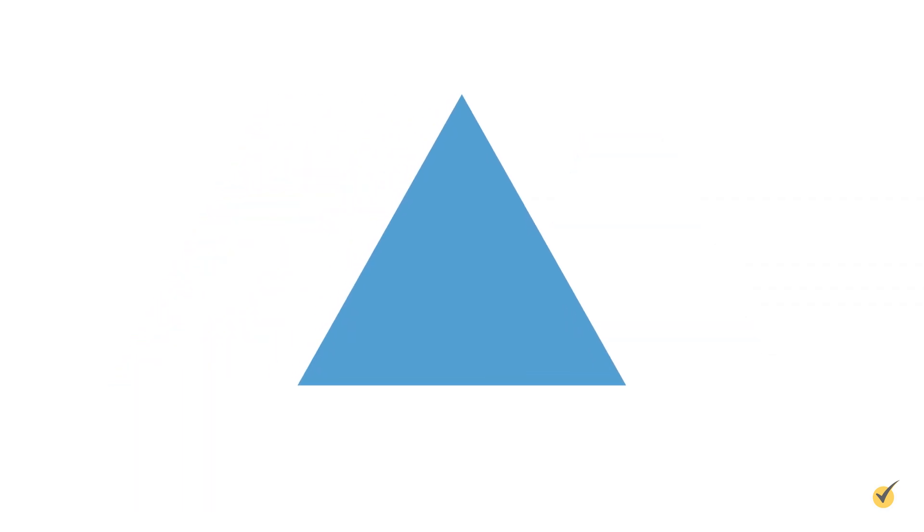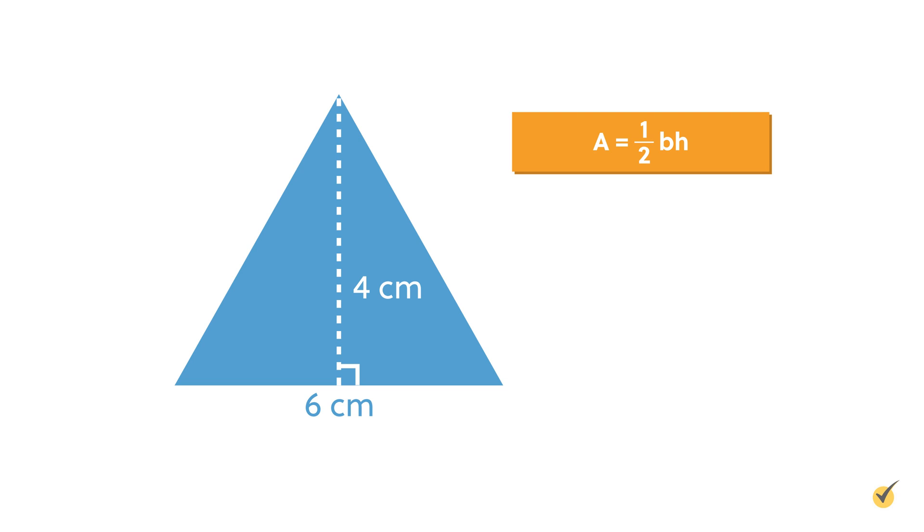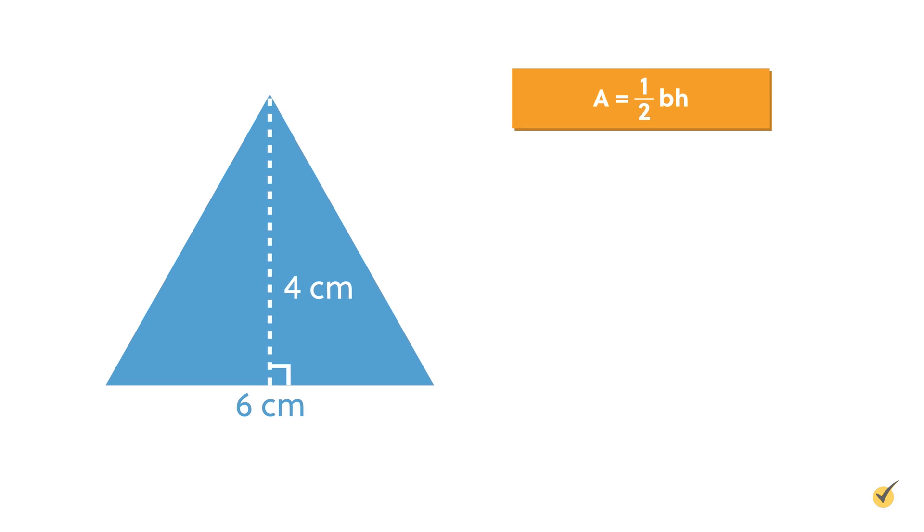Given that a triangle has a base of 6 centimeters and a height of 4 centimeters, calculate the area by substituting the values into the triangle area formula. It's important to know that the height of a triangle will always make a right angle with the base.